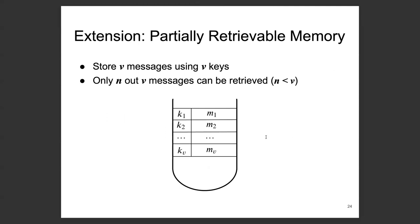We extended our construction to build what we call partially retrieval memory. So a consumable token can store a vector of V messages using V keys, and even knowing the set of keys, the V keys, an adversary can retrieve only up to n messages out of the V messages stored in the token.